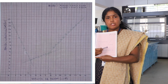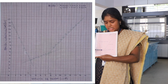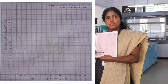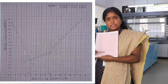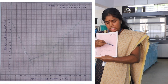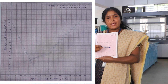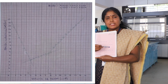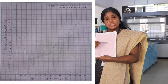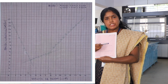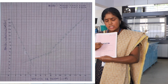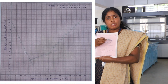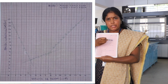This continues until all the acetic acid in the solution has been neutralized completely. Once all the acid has been neutralized, any sodium hydroxide added will be in excess, leading to the presence of a large number of hydroxyl ions in the system, which causes a steep increase in specific conductance of the solution.